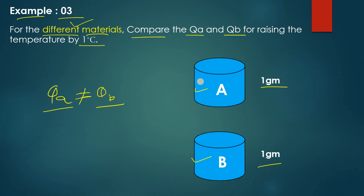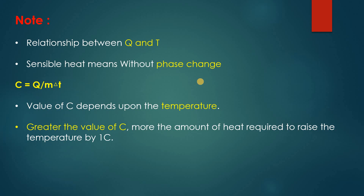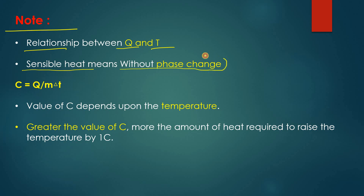Now let's see some key points for specific heat. The first one is: it is a relationship between Q and T, as we saw in our earlier examples and in the formula. Whenever we talk about sensible heat — sensible heat means without phase change — we are talking about without phase change. If the phase changes, another concept comes into play: latent heat. Right now we are talking about sensible heat, where the phase is not changing.